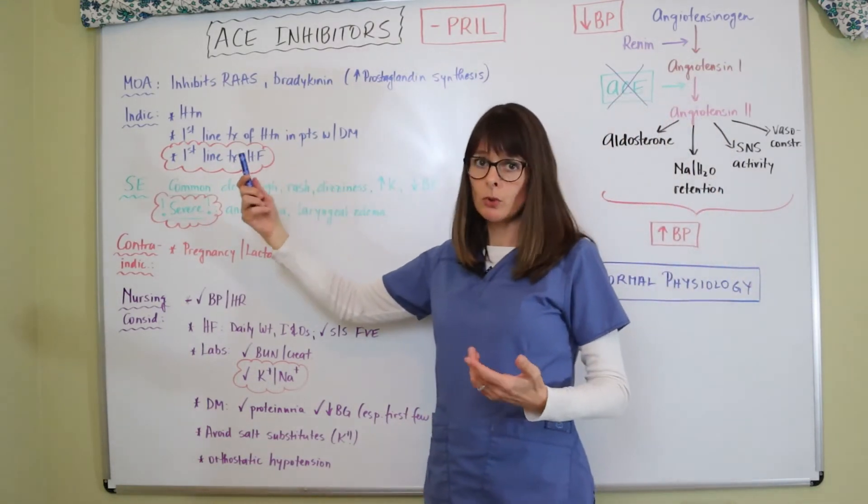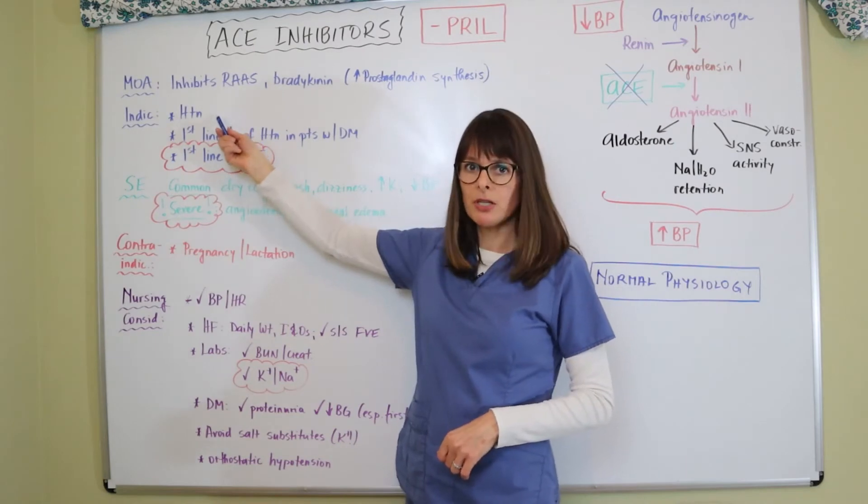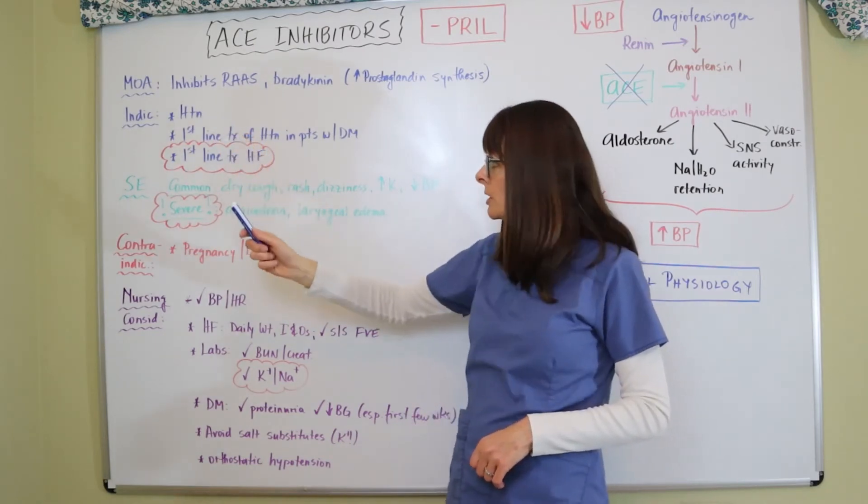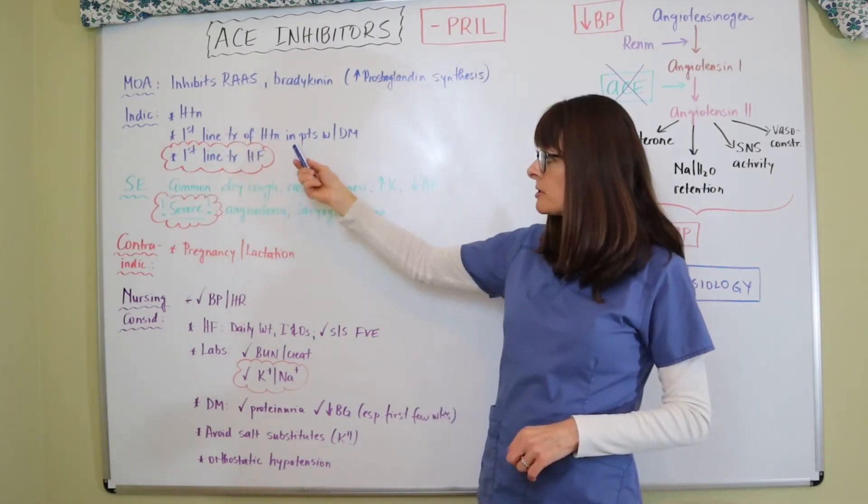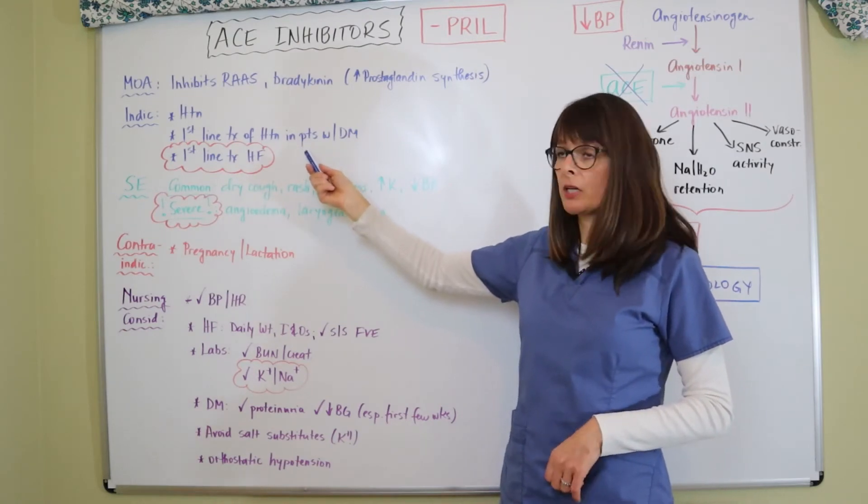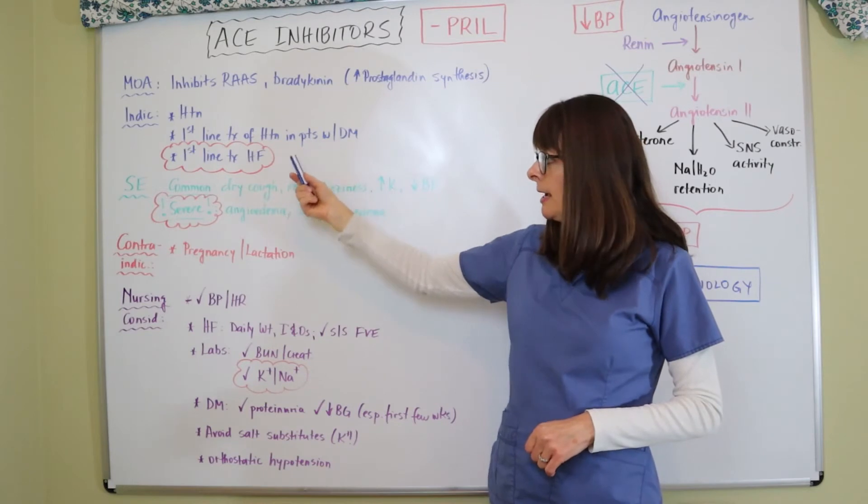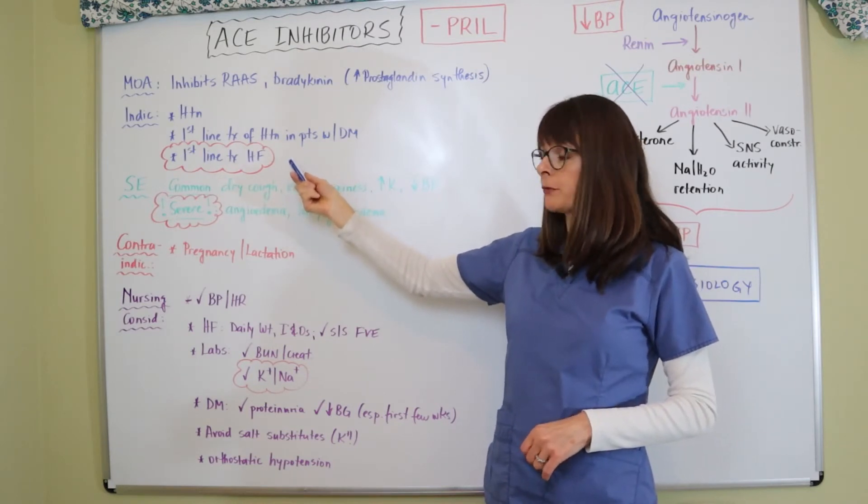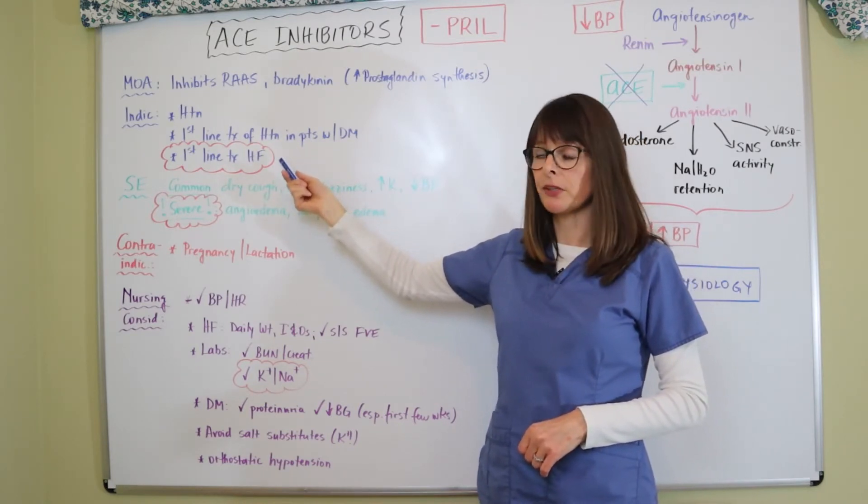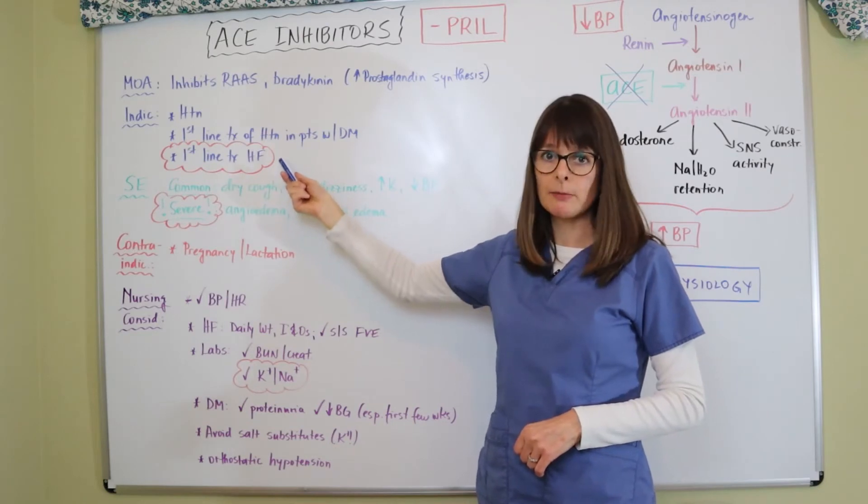So indications, we use it for the treatment of hypertension. It is very commonly used as well. It is the first line treatment of hypertension in patients with diabetes because it is renal protective. And it's also the first line of treatment for patients with heart failure. This tends to come up in exams quite a bit.